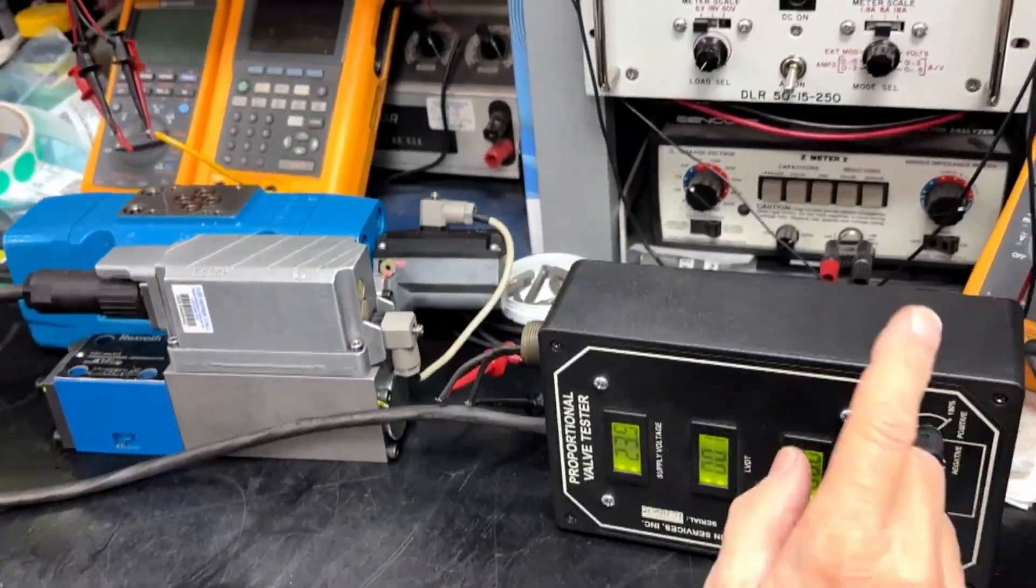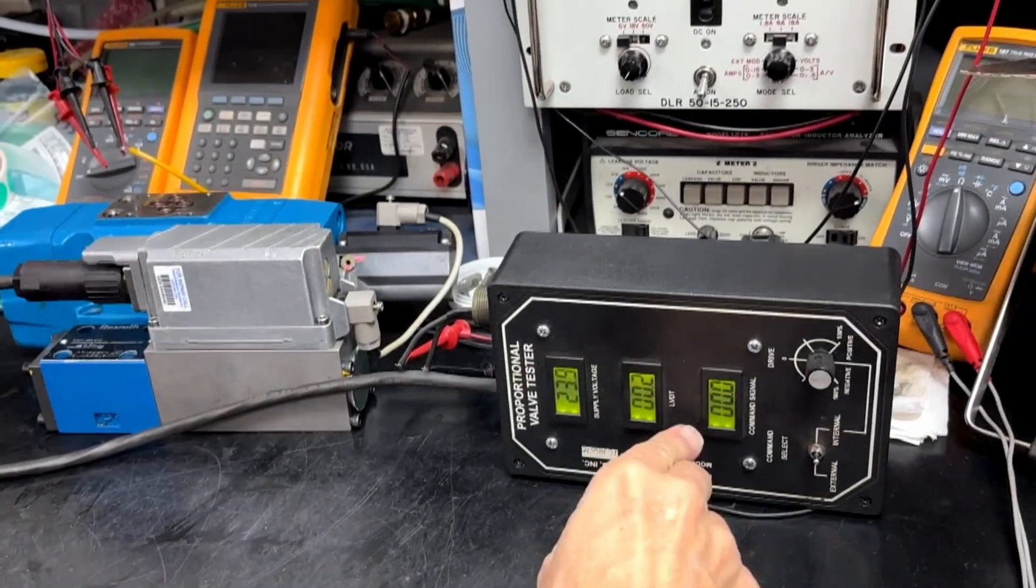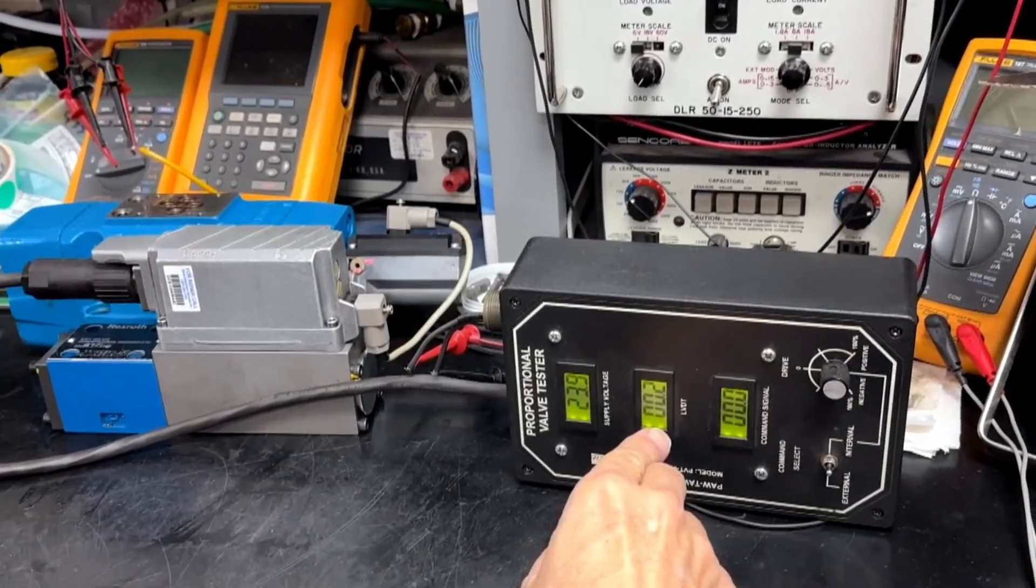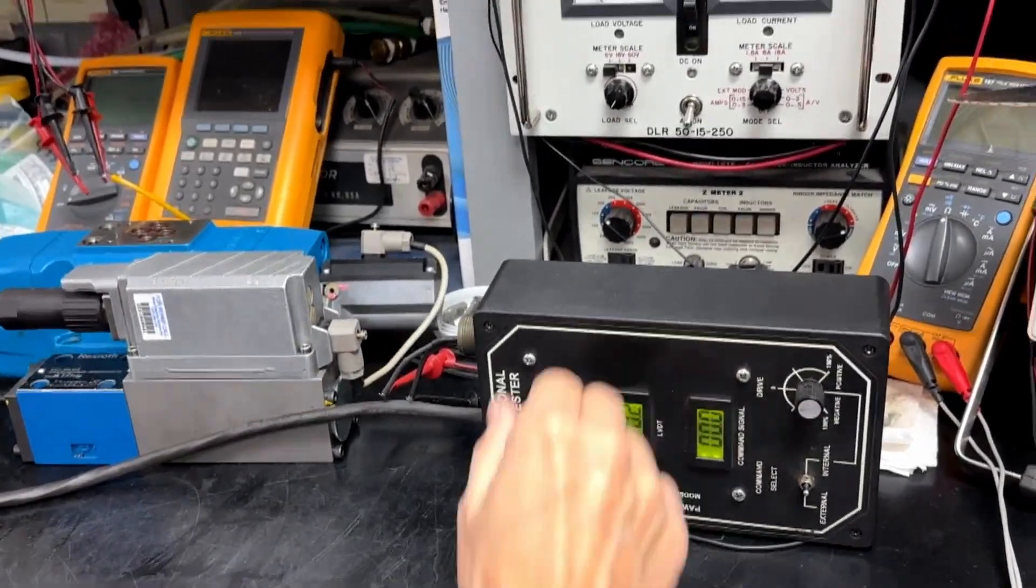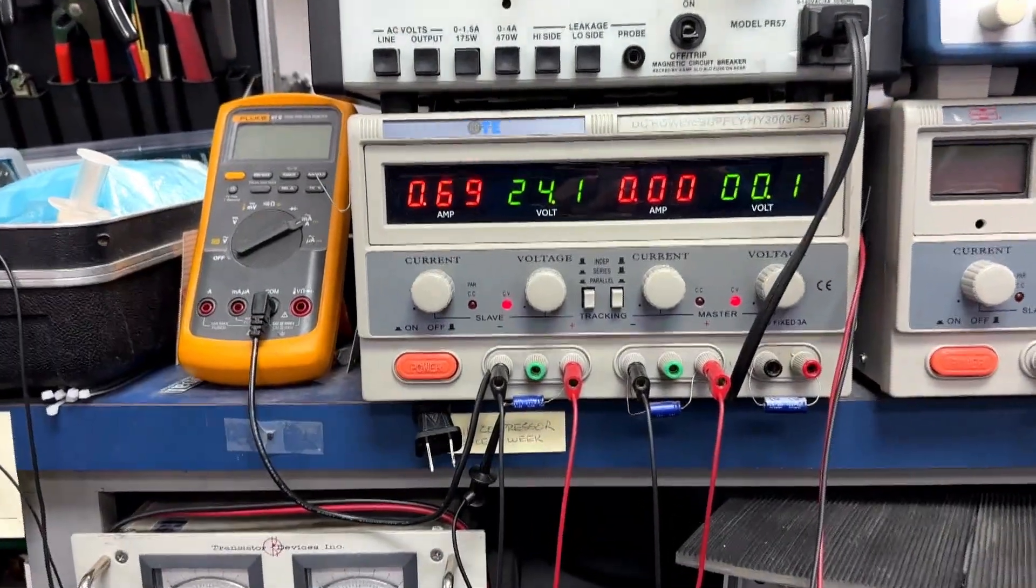To run a test on these, we hook up our valve tester. We have command signal set at zero volts output. This is our feedback section. This is our supply voltage. This is our supply. You can see the current level.